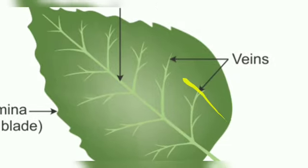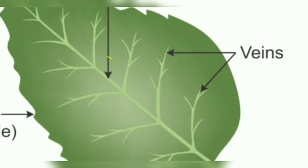These veins perform two different functions: one carries water and minerals, and the other carries prepared food from the green leaves to other parts of the plant.